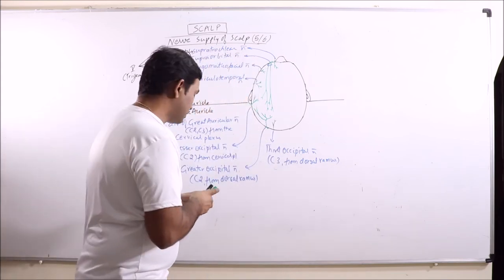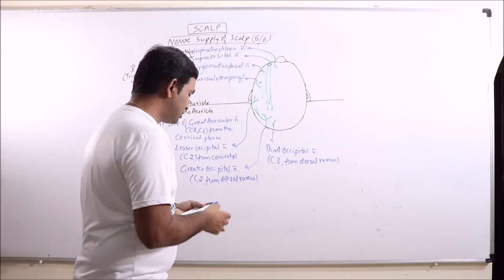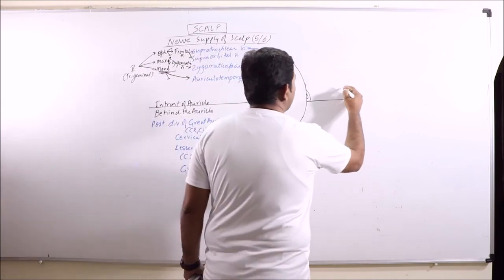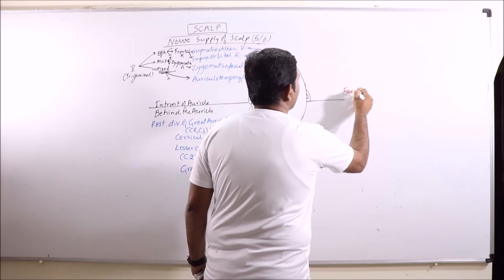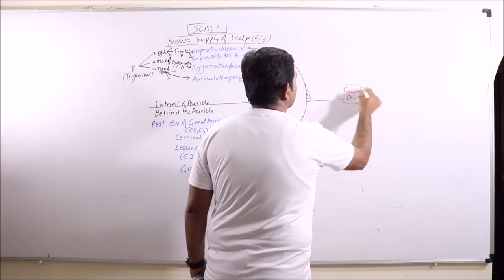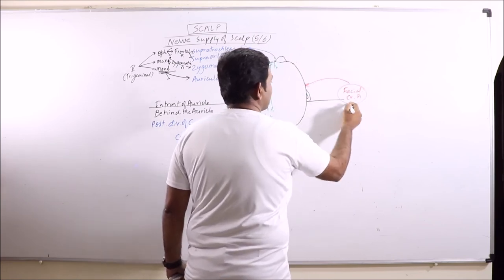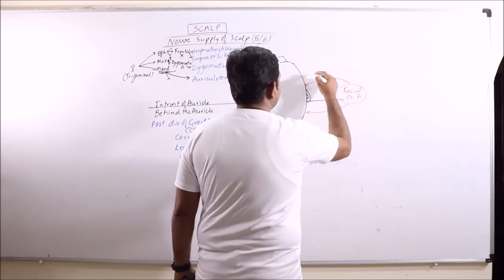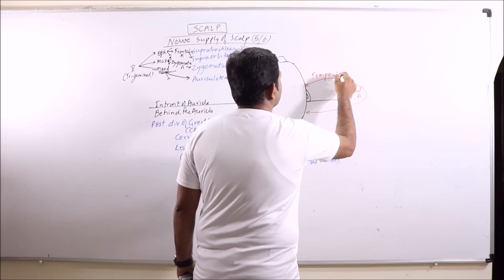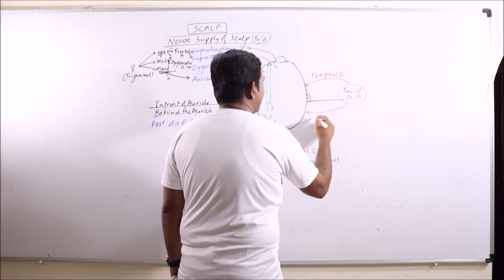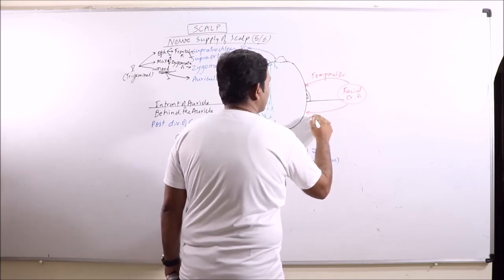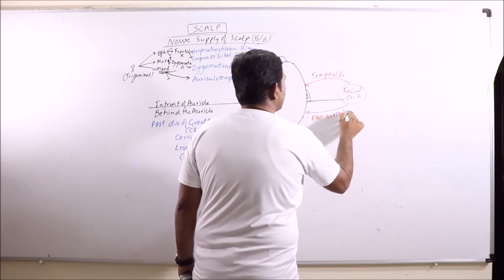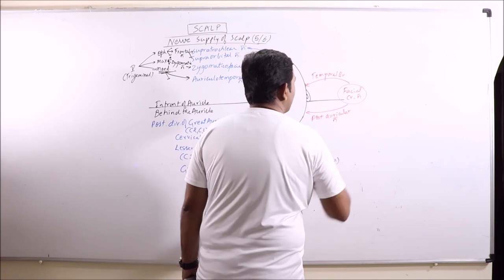Now motor supply. These are all sensory nerves and we are now going to discuss the motor supply. Motor supply is exclusively from facial cranial nerve. Anterior to in front of auricle is supplied by the temporal branch and the posterior, that is behind the auricle, is supplied by posterior auricular nerve of facial nerve.